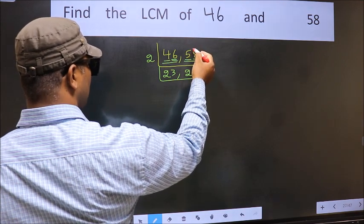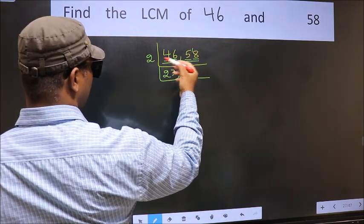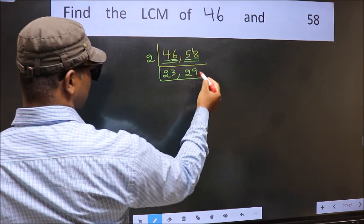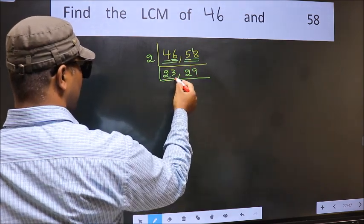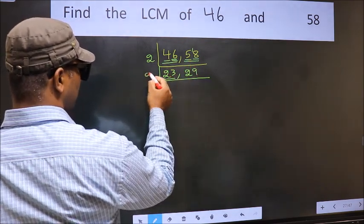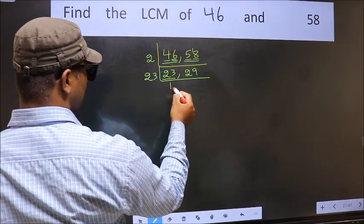5 minus 4 is 1, 1 carried forward makes 18. When do we get 18 in 2 table? 2 times 9 is 18. Now here we have 23. 23 is a prime number, so 23 times 1 is 23.